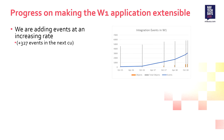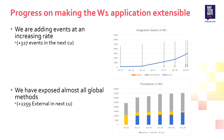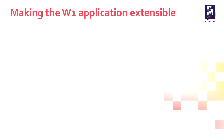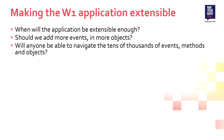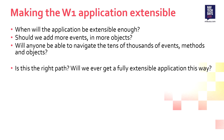How are we progressing on making the application more extensible? We're adding events - every release we add more events, and there are 327 events in the next cumulative update. For external methods we're almost done - in the next update we'll add 2,200 more. We had none in October 2016, and now there's almost no global non-external methods left. But when will the application be extensible enough? Should we add events in more objects to cover the entire application? Would you be able to navigate the tens of thousands of events, methods, and objects if we continue on this path? Is it the right path? We think there's a better way.